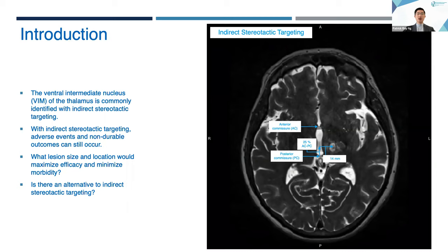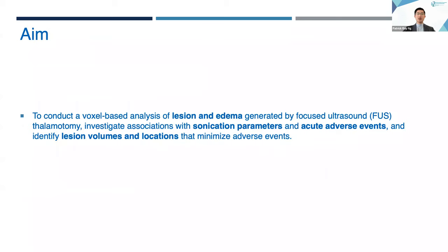Our main research questions are: what lesion size and location would maximize efficacy and minimize morbidity? And is there an alternative to indirect stereotactic targeting to achieve this outcome? To answer these questions, we conducted a voxel-based analysis of lesion and edema generated by FUS thalamotomy, investigated associations with sonication parameters and acute adverse events, and identified lesion volumes and locations that minimize adverse events.